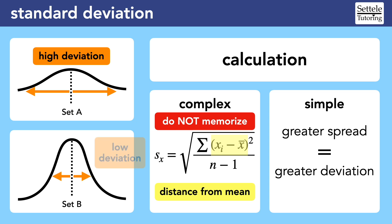On the other hand, the values for set B are more clustered together around the mean. Less spread means set B has a lower standard deviation.